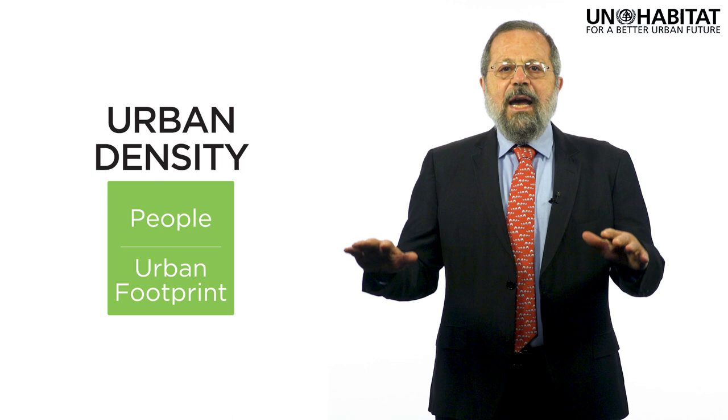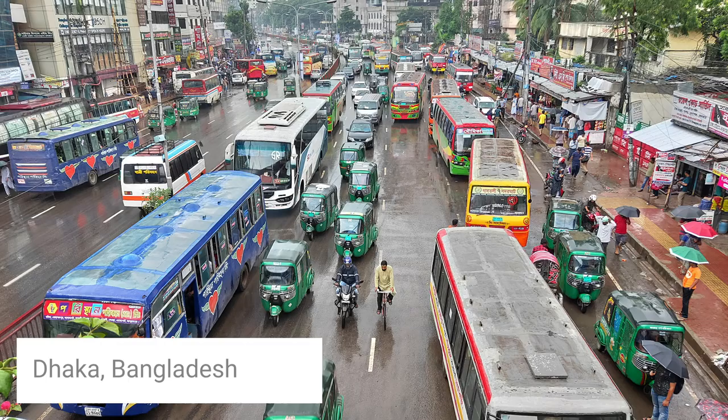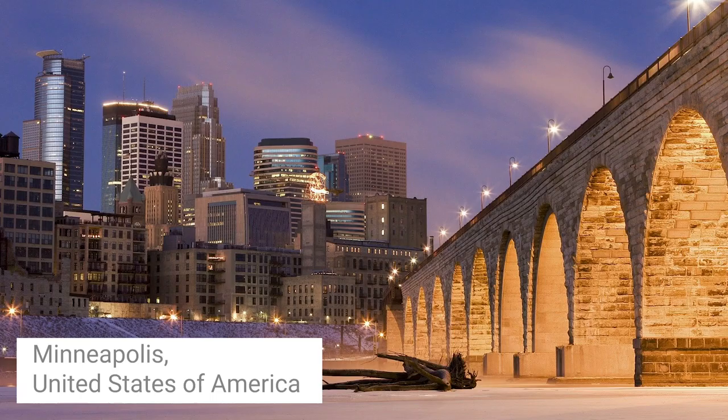Urban density is simply the ratio of the total population of the city and the total footprint the city occupies. We measure urban density in persons per hectare, where a hectare is one percent of a square kilometer. Dhaka, the capital of Bangladesh, had an average of 372 persons per hectare in 2014. Minneapolis in the United States had an average of 10. Urban density in Dhaka was 37 times that of Minneapolis. But just knowing these facts does not tell us much — they hide more than they reveal. In what sense is Dhaka's density high? In what sense is Minneapolis's density low?